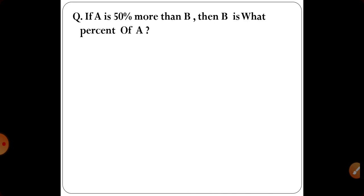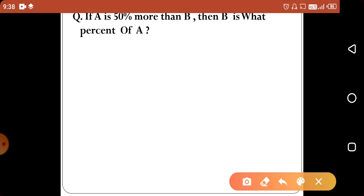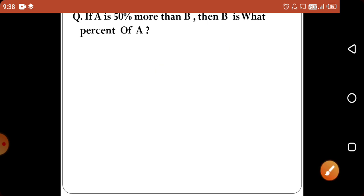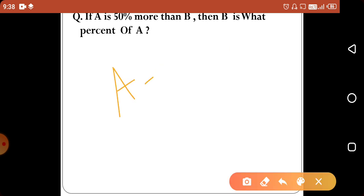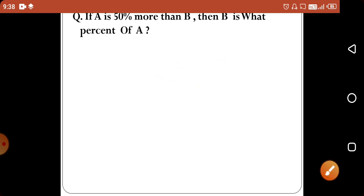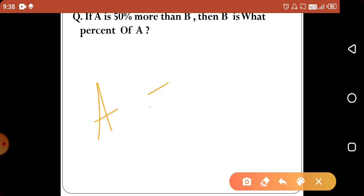If A is 50% more than B, then B is what percent of A? If we take B as 100%, then A will be 150, because A is 50% more than B.